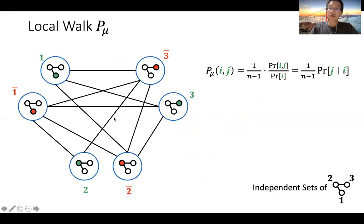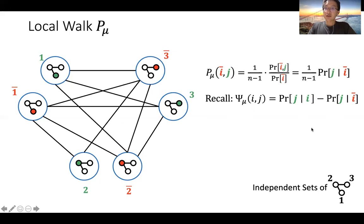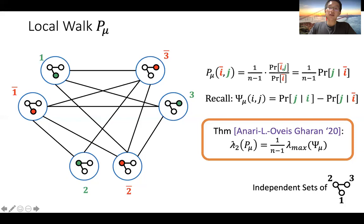The transition probabilities of the local walk exactly correspond to conditional marginal probabilities. For instance, the transition probability from one partial coloring to another is exactly 1/n times the conditional marginal probability. What we show is that the second largest eigenvalue of this local random walk equals 1 over n-1 times the maximum eigenvalue of the influence matrix.